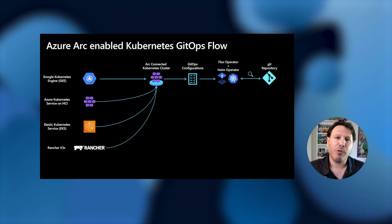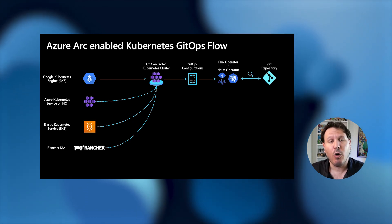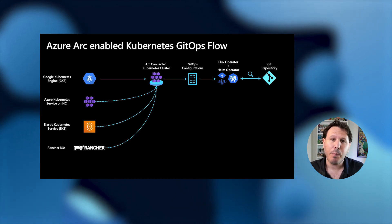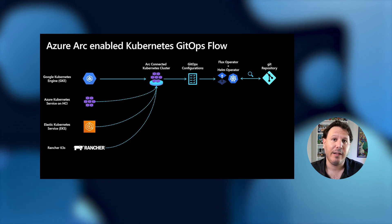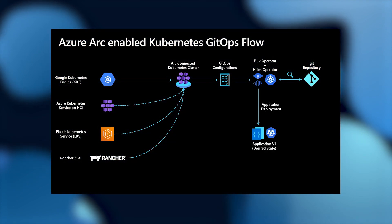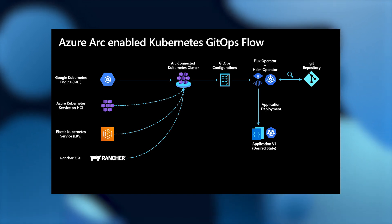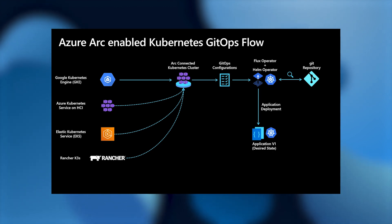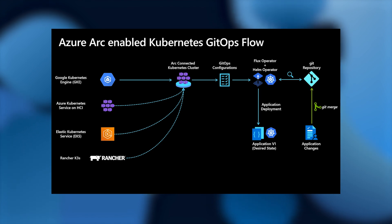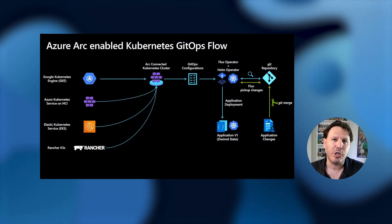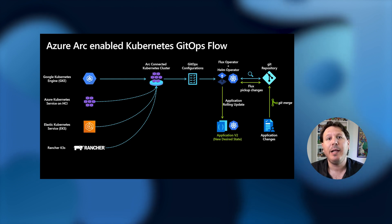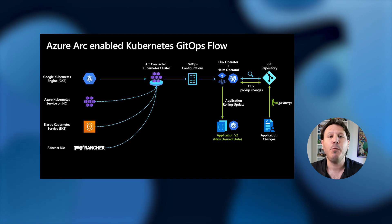The GitOps configurations are responsible for deploying the Flux operator and in our case also the Helm operator. The Flux operator and the Helm operator together create a handshake with the Git repository, which is the source of truth for your application and cluster configuration. Once the Flux operator starts listening to the Git repository, it deploys the application — we'll consider that version one and the desired state. Then we're going to make a change on that application, which will initiate the flow. Flux will pick up the changes from the Git repository and perform a rolling update, creating version two as the new desired state.